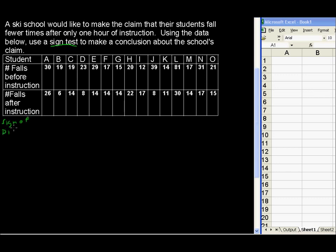Sign of the difference is one difference per column. So 30 is greater than 26, we're talking about before versus after, so that's a plus. 19 is greater than 6, that's a plus. 19 is greater than 14, 23 is greater than 8, 29 is greater than 14, 17 greater than 14, 15 greater than 14.